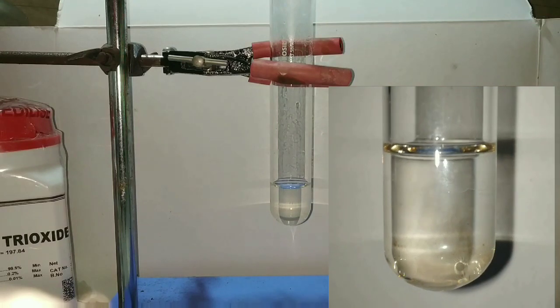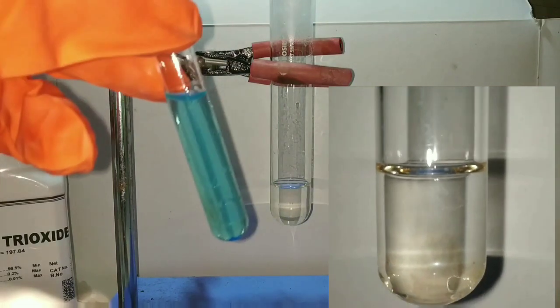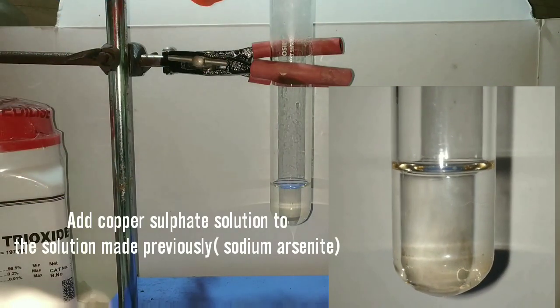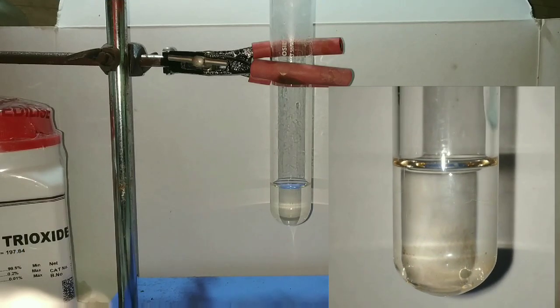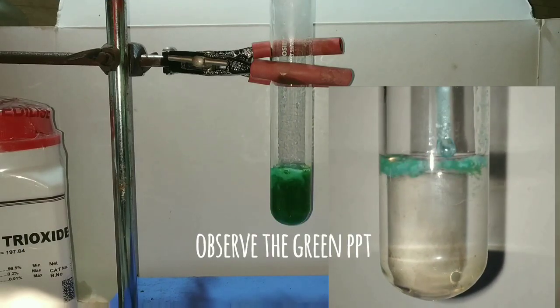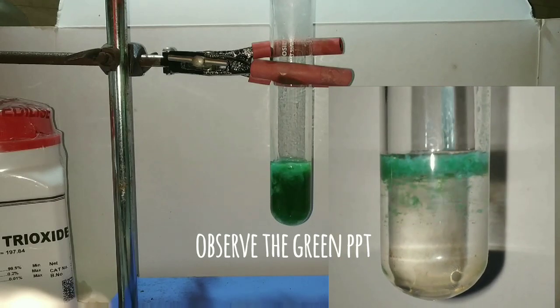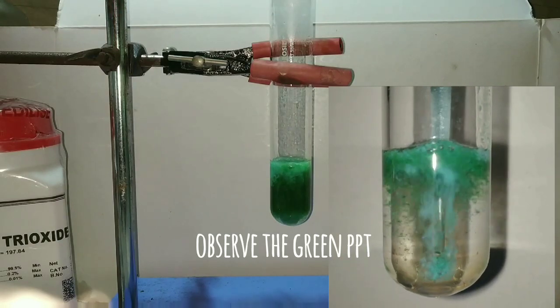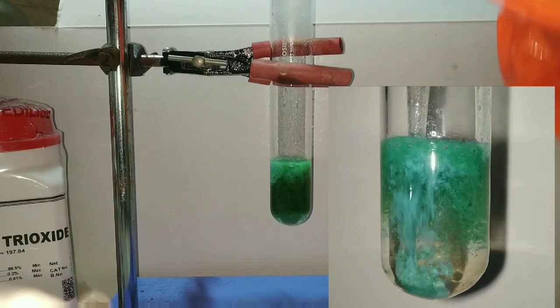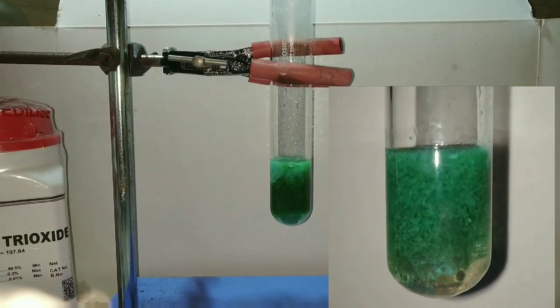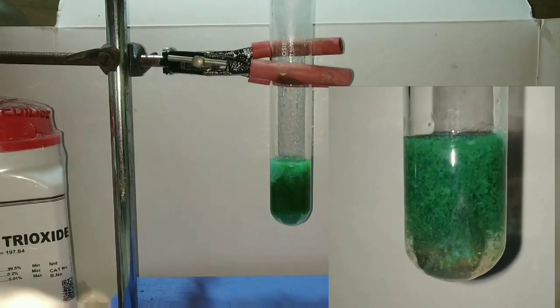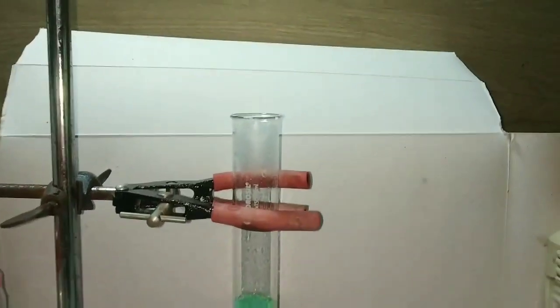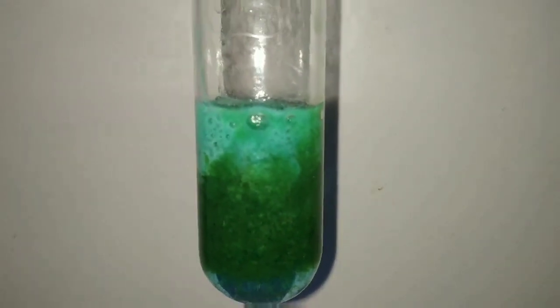Here we will be preparing the Scheele's green. First of all we take the sodium arsenide solution prepared earlier and add the copper sulfate solution. You can see that as soon as I add the copper sulfate there is formation of a beautiful green precipitate and this green precipitate is the copper arsenide. And this was the dye used for painting walls previously but it has been banned now because of the toxicity produced by the arsenic.